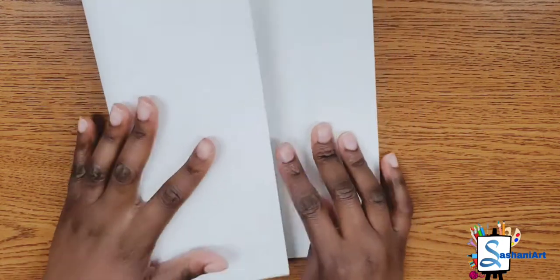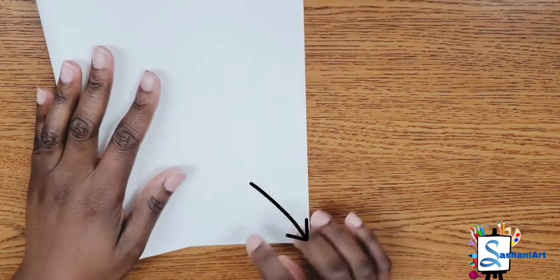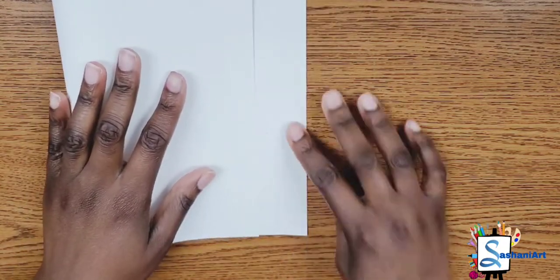First we're going to fold our paper in half, allowing both edges to meet.